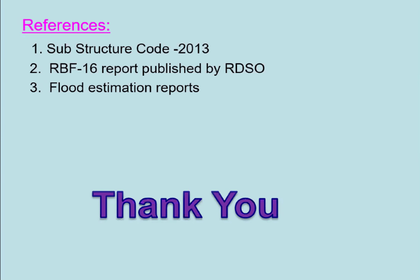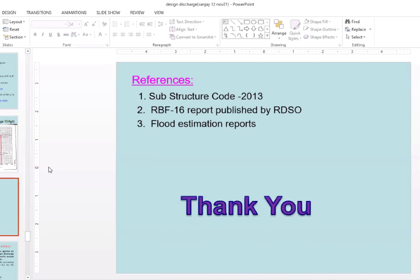Q&A: On clearance between high flood level and the bottom of girder for national highway bridges — in railways it depends on the type of opening. For box structures, no clearance is required as it is an indeterminate structure. For arch bridges it depends on the span, and for slab bridges it depends on the discharge. Different guidelines are provided in the substructure code of Indian Railway depending on discharge and opening type.